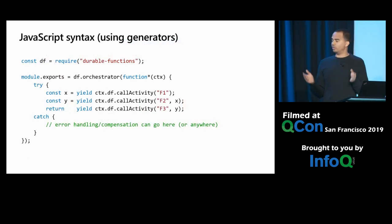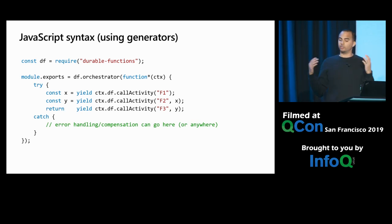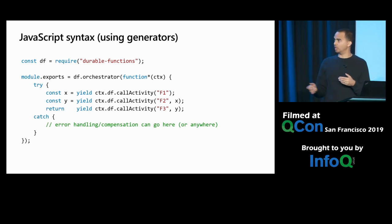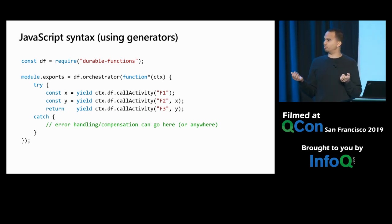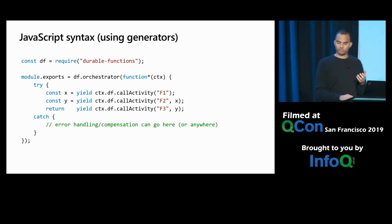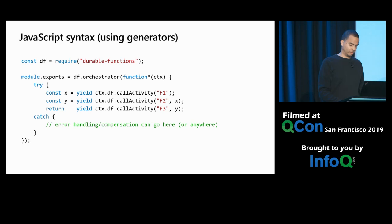Because we're using event sourcing and not doing memory snapshotting or compiler tricks, we can actually do this in multiple languages pretty easily. Here's the exact same orchestrator function — the function chain — written in JavaScript. In JavaScript we use generators instead of async/await because we have a little more control compared to the way promises work. But it's the same basic idea — just replace await with yield — and we can do the same things, powered by event sourcing.